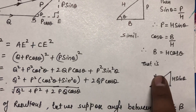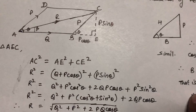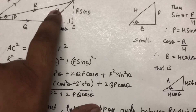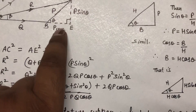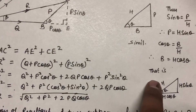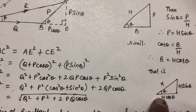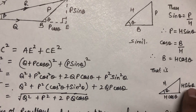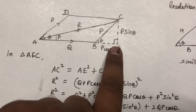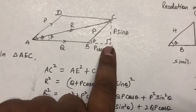Applying the same method here: if this side is P, then this component is P sin θ and this one is P cos θ — just as H cos θ and H sin θ correspond to P cos θ and P sin θ.